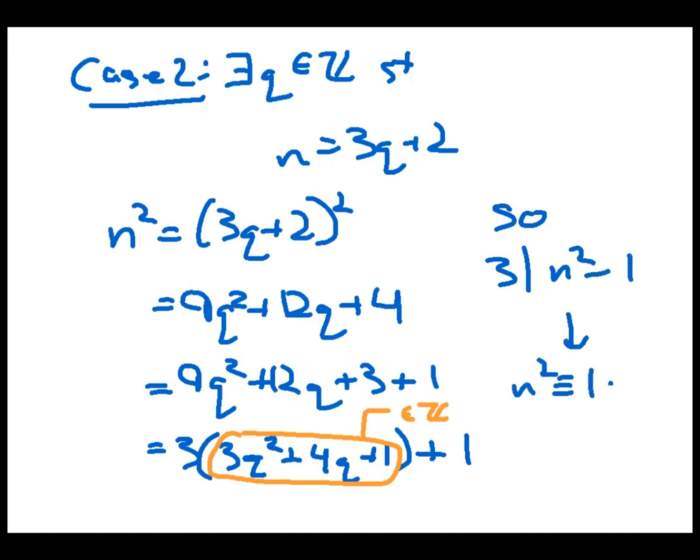And again, since these two cases cover all the possibilities of the integer n, remember it wasn't divisible by 3, otherwise we would have to add a third case where n is divisible by 3. And since none of these cases overlap, this does complete the whole proof.